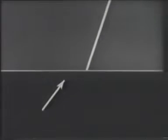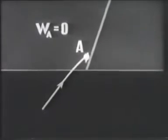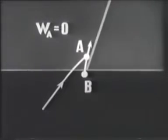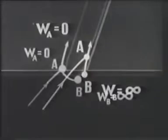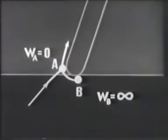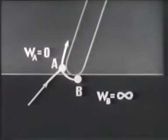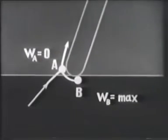Центральная струйка попадает в точку разветвления, в которой скорость потока равна нулю. Растекаясь, поток ускоряется. В точке B бесконечно тонкой пластины его скорость должна быть бесконечной. Реальная пластина имеет конечную толщину, и в точке B, хотя скорость и велика, но конечна.